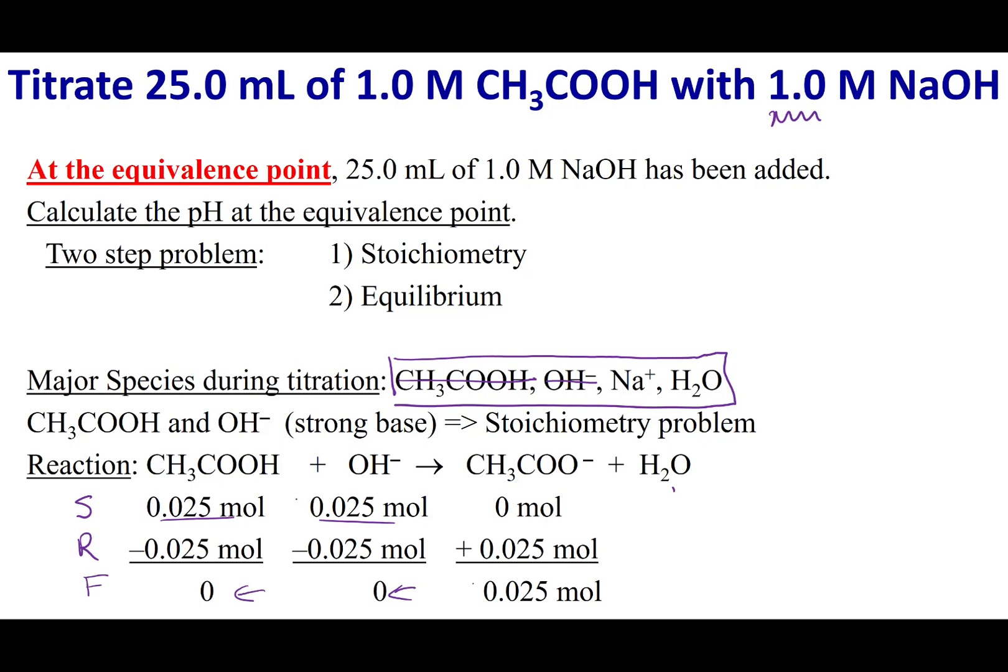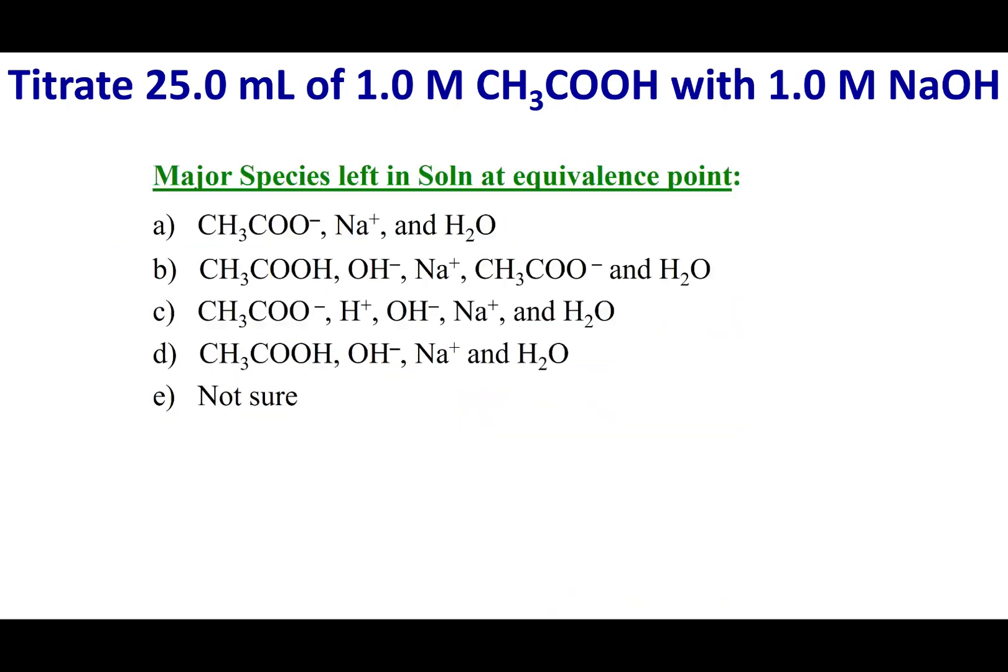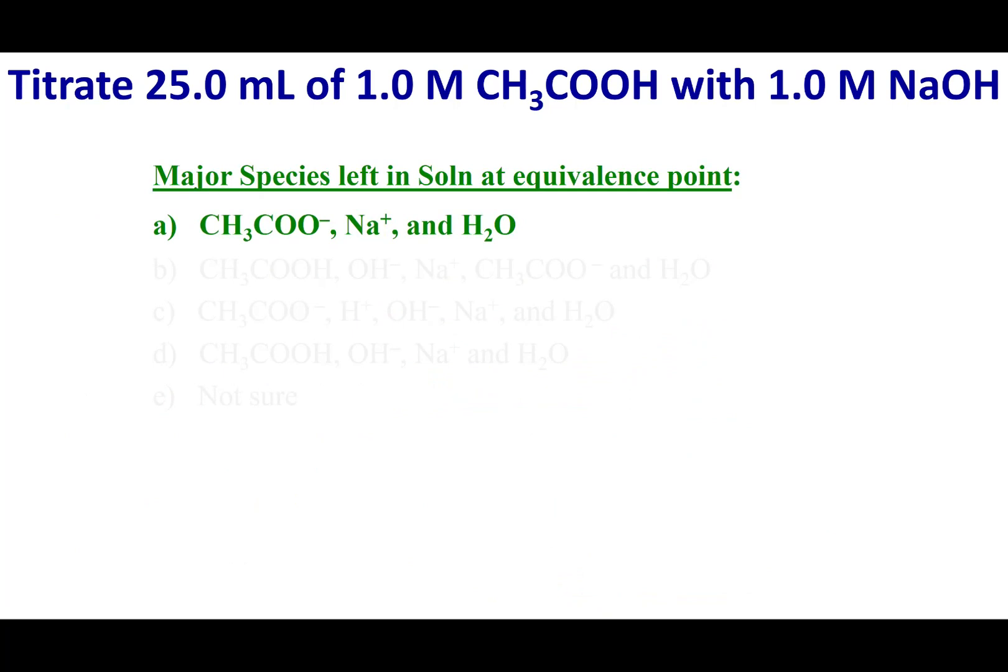However, I generated something new. I generated acetate. And so if I want to write all the major species after my surf table, well, it's going to be everything that I have left over. So my Na+, my H2O, and it is also going to be the acetate that I produced during the course of that surf table. So that's why these are the major species at the equivalence point.